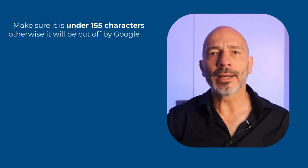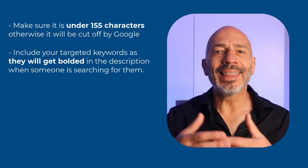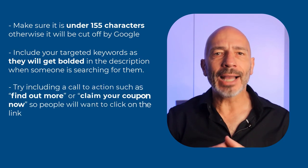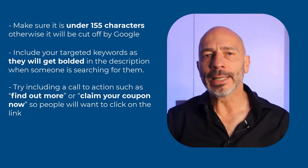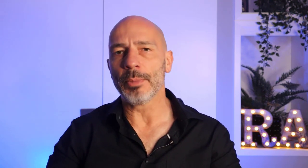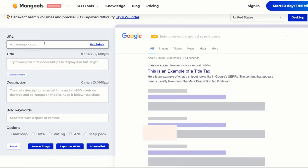Here is what I recommend when writing a meta description: make sure it is under 150 characters, otherwise it will be cut off by Google; include your targeted keywords as they will get bolded in the description when someone is searching for them; try including a call to action such as 'Find out more' or 'Claim your coupon now'; and add power words that can emotionally influence searchers. For our Detroit HVAC specialist, an example could be: 'Fast, responsive, qualified heating repair specialist in Detroit. Get a free quote today. No hidden charges, no call-out fees. We clean when we're done.'